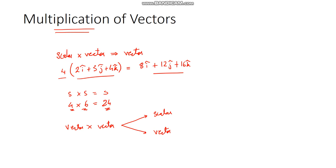It depends upon which method of multiplication you are using. There are two kinds of product: one is the scalar product to get a scalar output, and the other is the vector product to get a vector output. The scalar product is also called the dot product, and the vector product is also called the cross product. We will see these two in detail.